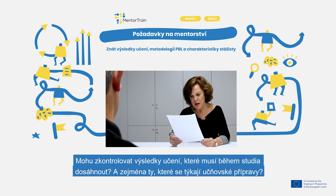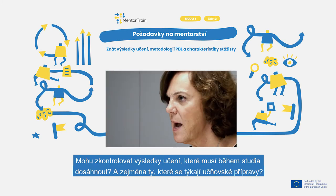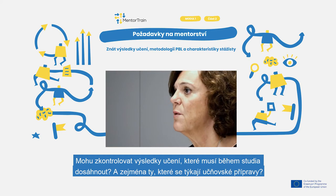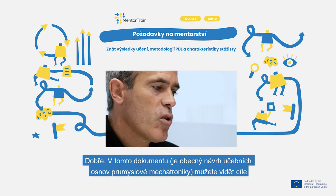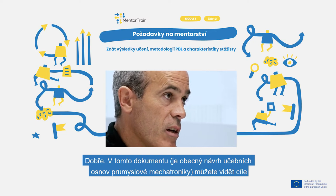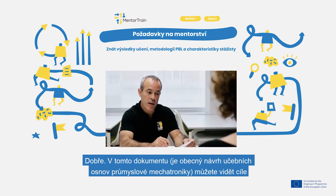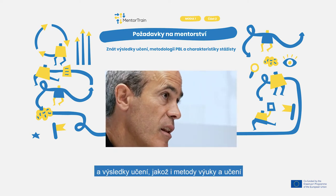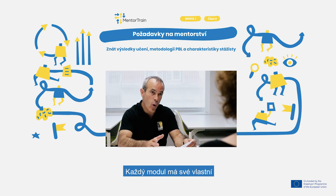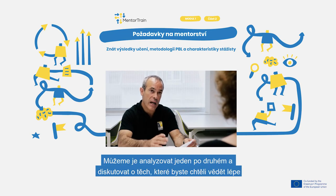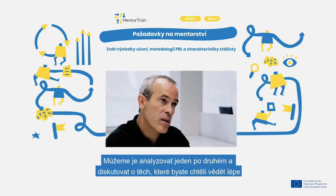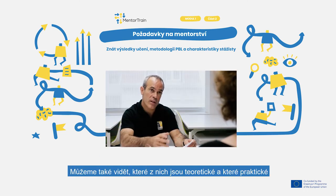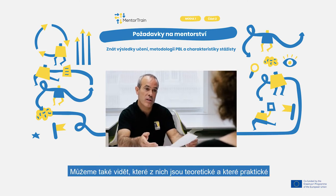Could I check the learning outcomes he has to achieve during his studies, and especially those related to the apprenticeships? In this document — this is the general curricular design of industrial mechatronics — you can see the objectives and the learning outcomes as well as the teaching and learning methods. Every module has its own ones, and we can analyze them one by one and discuss those you would like to know better. We can also see which ones are theoretical and which ones are practical.